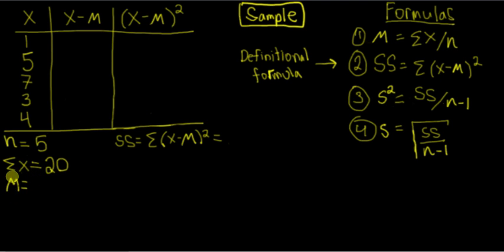Finally we have m, and m represents the sample mean. The formula for the sample mean is the sum of x divided by little n. So the sum of x is 20 divided by little n, which is five, giving us a sample mean of four.